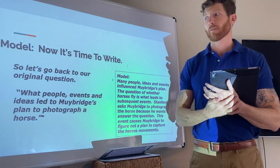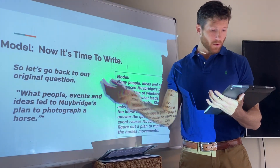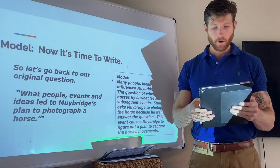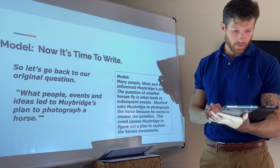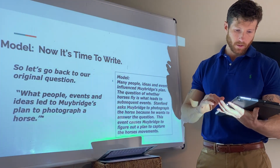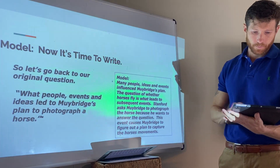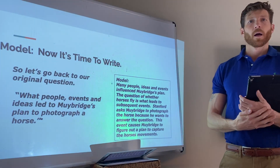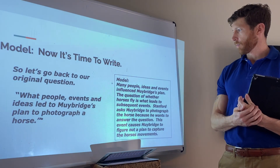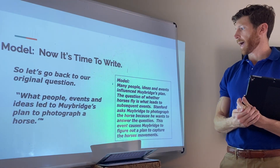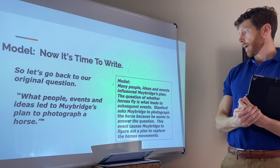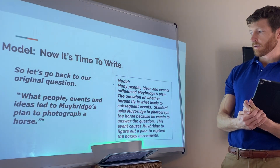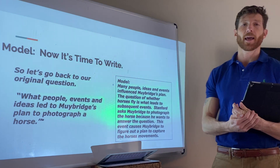Now it's time to write. We were to answer this question: what people, events, and ideas led to Muybridge's plan to photograph a horse? Here is my model response. Many people, ideas, and events influenced Muybridge's plan. The question of whether horses fly is what leads to subsequent events. Stanford asked Muybridge to photograph the horse because he wanted to answer the question. This event causes Muybridge to figure out a plan to capture the horse's movements.